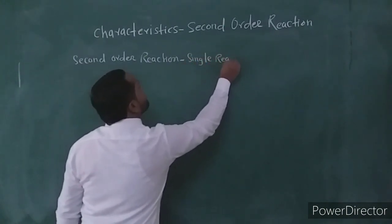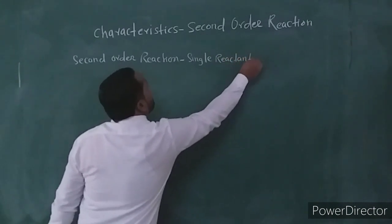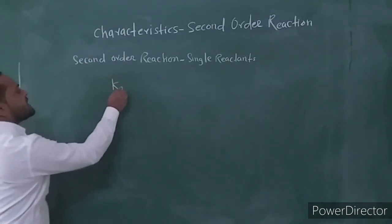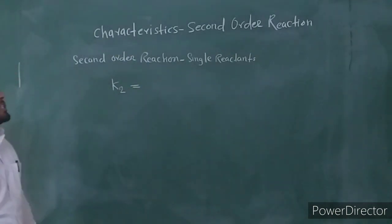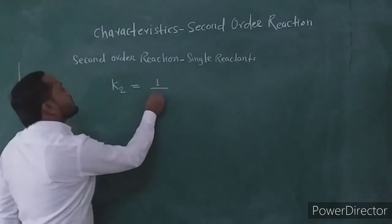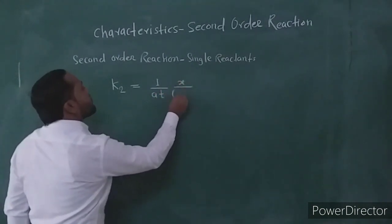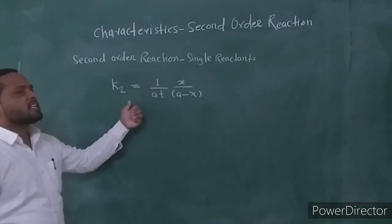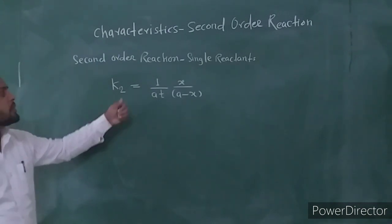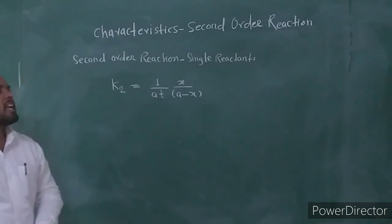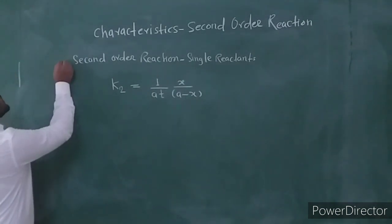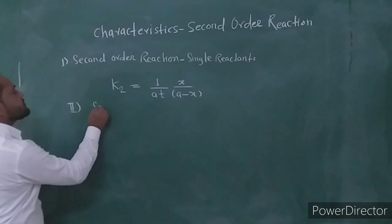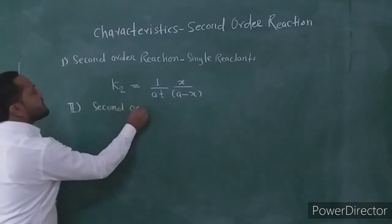For the second-order reaction involving a single reactant, the integrated rate equation is: K2 is equal to 1 upon A into T, times X upon A minus X. This is case one for the second-order reaction.